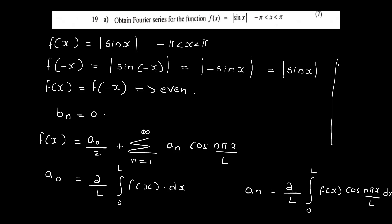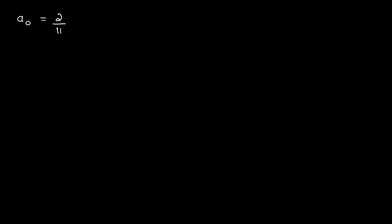The range is -π less than x less than π, so l = π. The total length is π - (-π) = 2π, so l = π. Therefore a₀ equals 2/π integral from 0 to π. Since f(x) = |sin x|, on 0 to π, sin x is positive, so |sin x| = sin x.